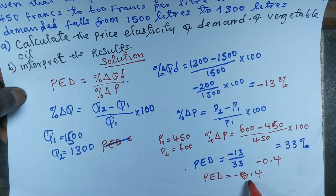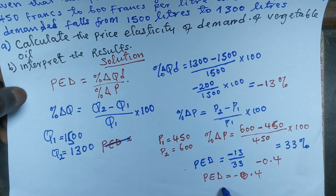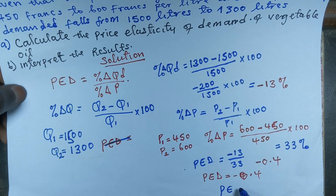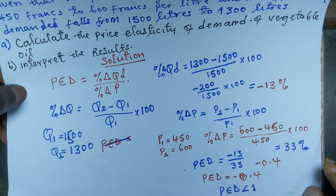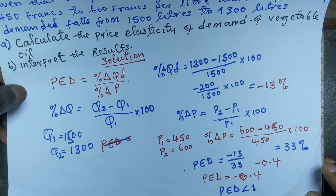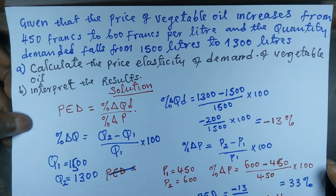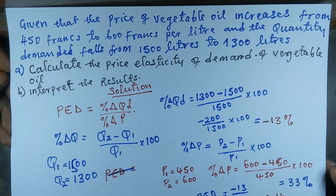The negative sign shows the inverse relationship between price and quantity demanded. This can be interpreted as: since the value is less than 1, demand is said to be inelastic, meaning consumers react slowly to changes in price. Thank you for watching this video — please subscribe, share my videos, and let me know in the comments if it was helpful.